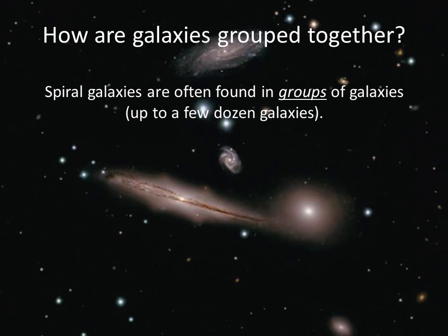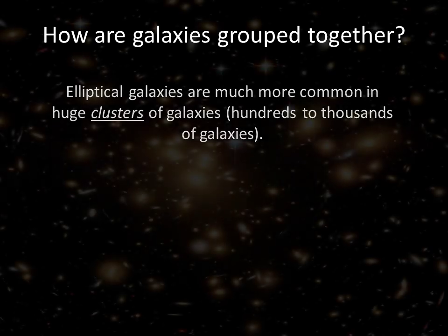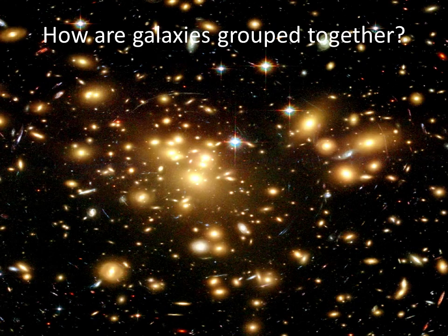So how are galaxies grouped together? Most of the galaxies in the universe are gravitationally bound together with neighboring galaxies. Spiral galaxies are often found in loose collections of up to a few dozen galaxies called groups — our Milky Way is part of the Local Group, for example. Elliptical galaxies are particularly common in clusters of galaxies, which can contain hundreds and sometimes thousands of galaxies extending over more than 10 million light years.